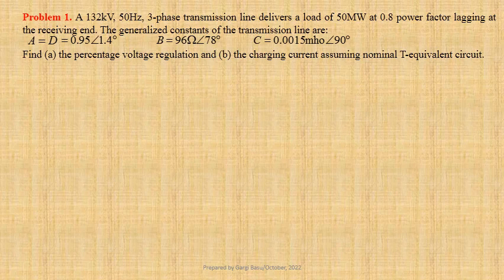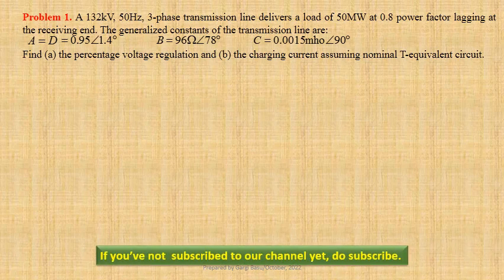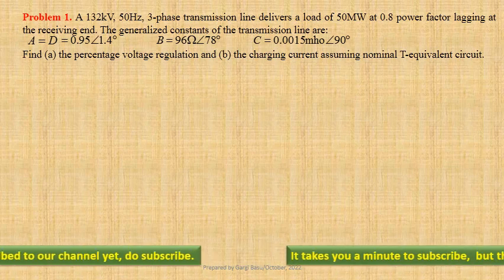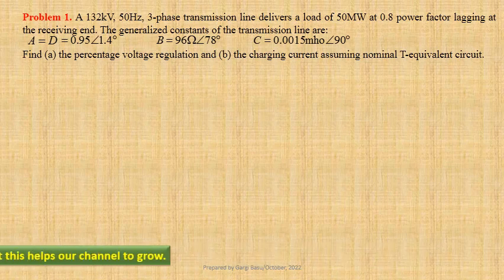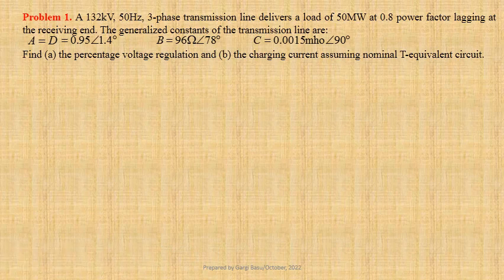A 132 kV, 50 Hz three-phase transmission line delivers a load of 50 MW at 0.8 power factor lagging at the receiving end. The generalized constants of the transmission line are: A equals D equals 0.95 at an angle 1.4 degree, B equals 96 ohm at an angle 78 degree, and C equals 0.0015 siemens at an angle 90 degree. We have to determine the percentage voltage regulation and the charging current assuming nominal T equivalent circuit.